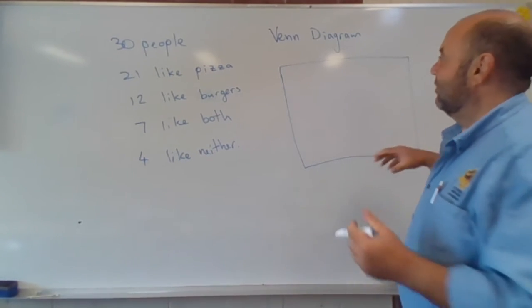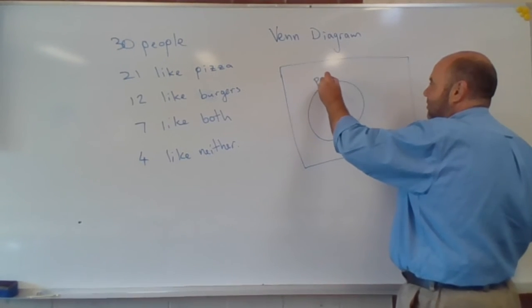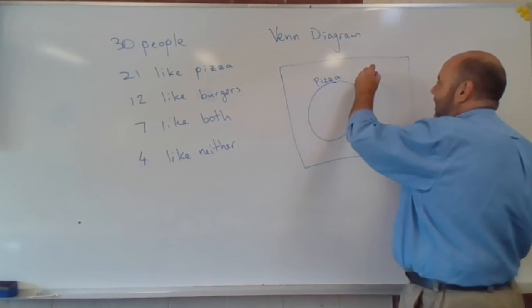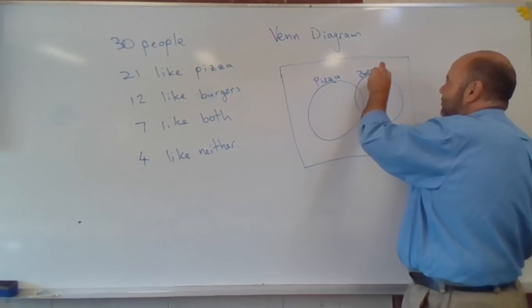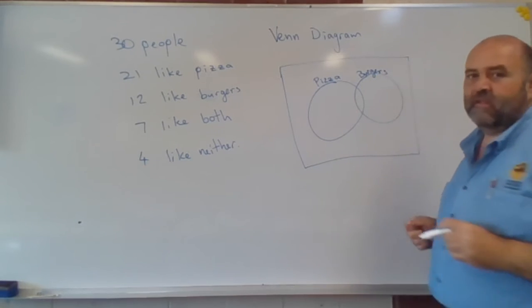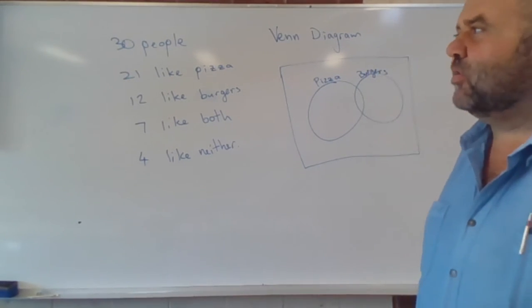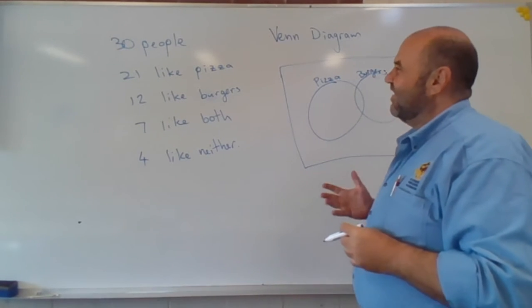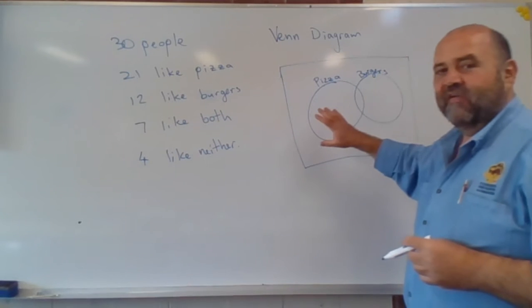The whole rectangle is our entire sample space. So somehow all 30 people have to be accounted for in this sample space. Now we've got some people who are into pizza and some people who are into burgers, and we've got to basically sort of position people here. So we know that there are seven people who like both.